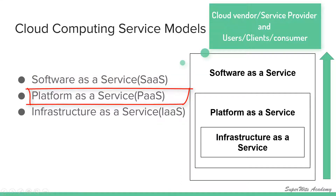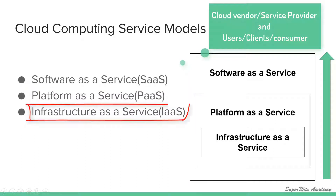The second service model is Platform as a Service. It provides virtual machines, operating systems, application services, development frameworks, transactions, and control structures. The service provider manages the infrastructure, operating system, and software frameworks required for application development, whereas the client is responsible for installing, managing, and deploying the application. Best examples in the market are Google App Engine and Microsoft Azure.